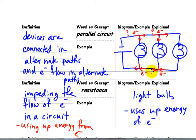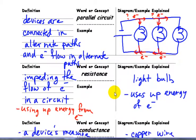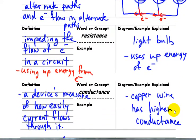Next. Resistance. Impeding the flow of electrons in a circuit. And they use up energy of electrons. So for example, any device in the circuit, light bulbs, etc., use up energy of the electrons.